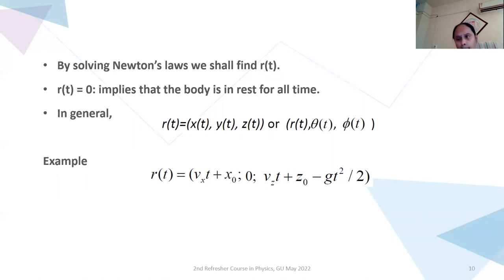This is Cartesian form or I can have spherical form that is R of T, Theta of T, Phi of T. First, let us talk about Cartesian form. In Cartesian form, R of T is Vx T plus X naught, zero, Vz T plus Z0 minus G T square by 2.